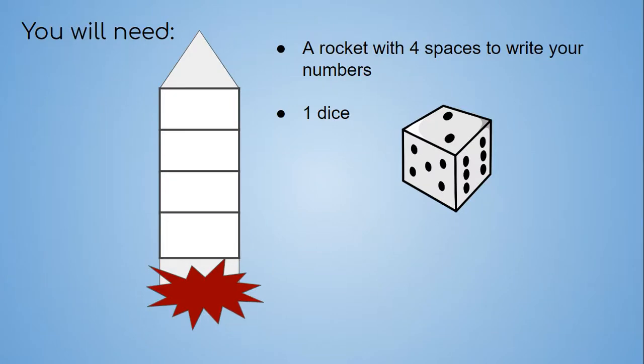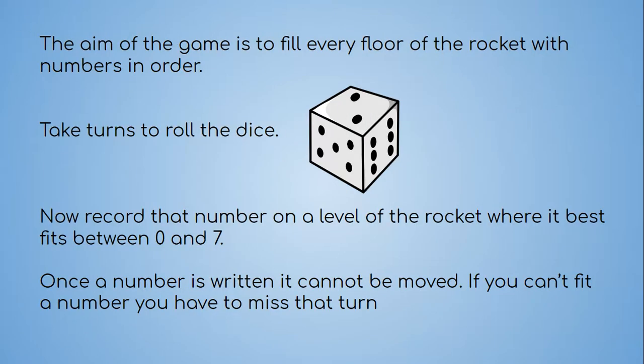You will need a rocket with four spaces to write some numbers in and one dice. The aim of the game is to fill every floor of the rocket with numbers in order. You take turns rolling a dice and then you record that number on a level of the rocket where it best fits between the numbers 0 and 7. Once a number is written, it cannot be moved. If you can't fit a number, then you have to miss that turn.